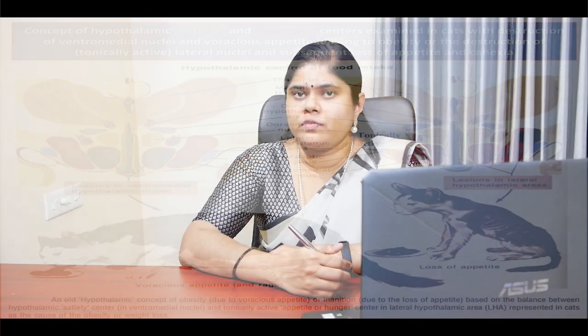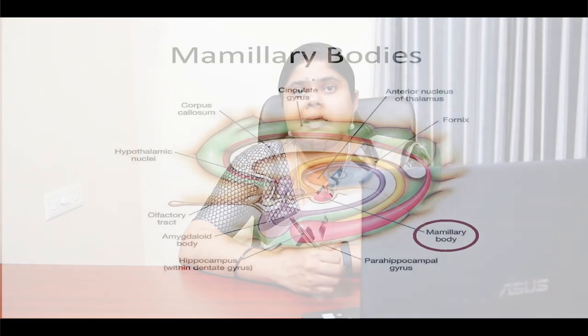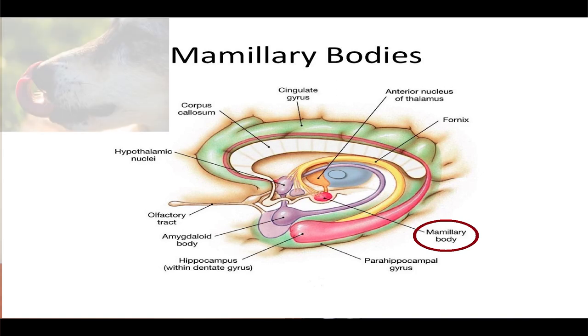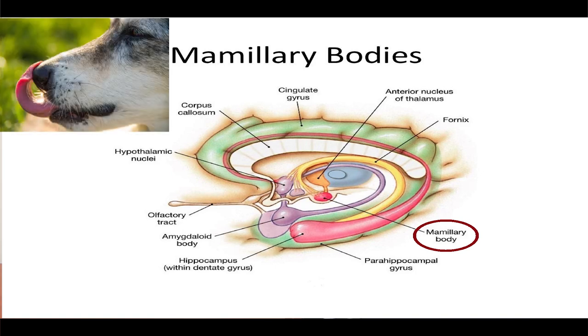Another area of the hypothalamus involved in overall control of gastrointestinal activity is the mammillary bodies. These control, at least partially, the patterns of many feeding reflexes such as licking the lips.